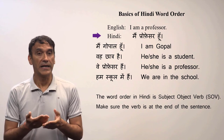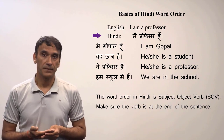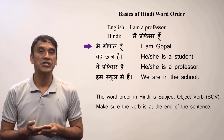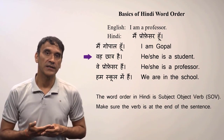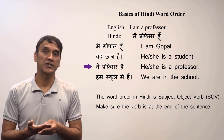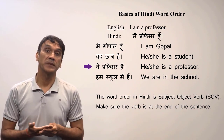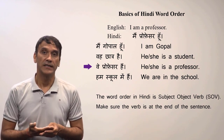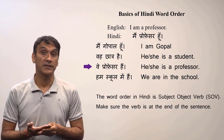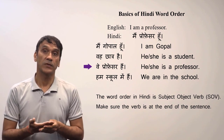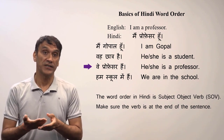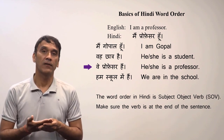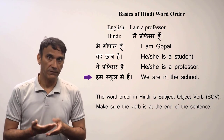The literal Hindi word order would be 'I professor am.' More examples: MAIN Gopal HU — I am Gopal; WO chhatra HAIN — he/she is a student; WO professor HAIN — he/she is a professor, which can also mean 'they are a professor' due to the respectful use of WO. Finally, HUM school mein HAIN — we are in school.